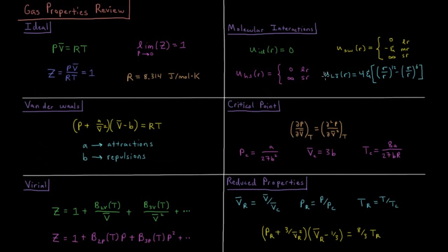Or the more advanced Leonard Jones potential, where we have a 1 over r to the 12th repulsion and a 1 over r to the 6th attraction between the particles.